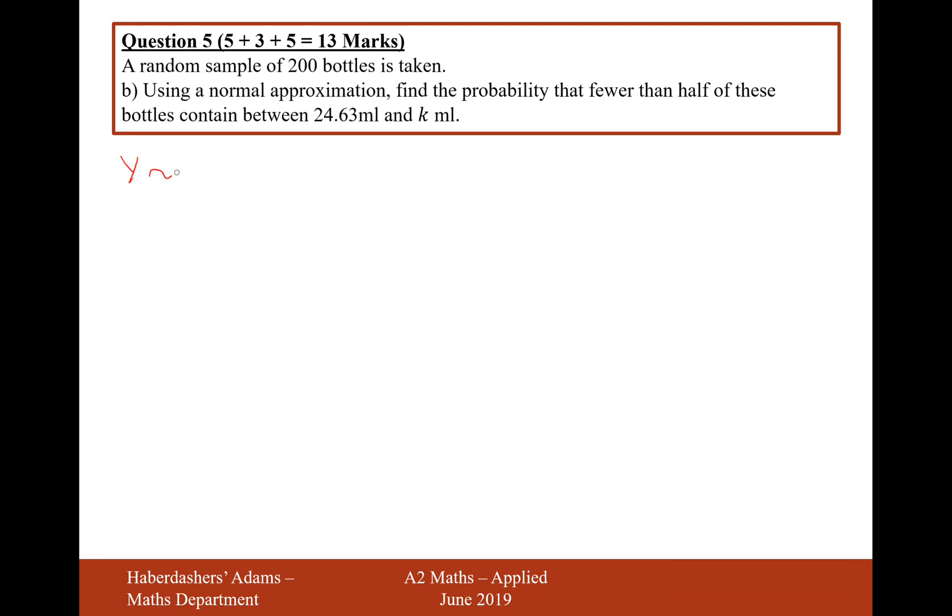So what we effectively have here is a binomial distribution with 200 trials with a probability of 0.45 as success. And we want to find the probability that fewer than half of these bottles contain between this value, but it wants us to use a normal approximation. So when we do that normal approximation, it's going to be W is normally distributed. Now the mean is calculated by doing 200 times 0.45. It's NP, isn't it? N is the number of trials. P is the probability of success. So it's NP for the mean. That's 90.